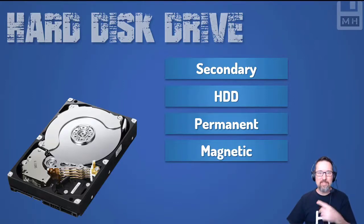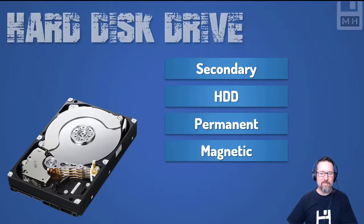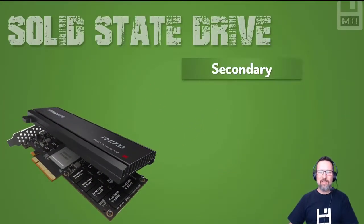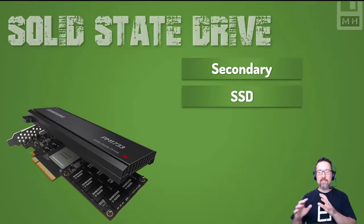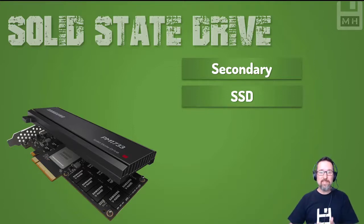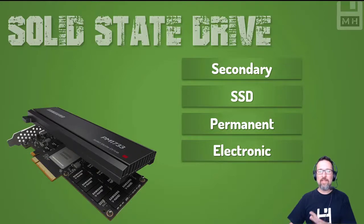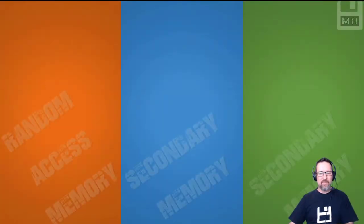The hard disk drive uses magnetic storage — it's got a spinning disk and a special needle, as covered in other hardware videos. Secondary memory also includes our solid state drive, or SSD. Solid state means nothing is moving. The SSD is also electronic storage, it's permanent, and this is where everything is going — we're moving away from magnetic hard drives towards solid state drives as they become more affordable.